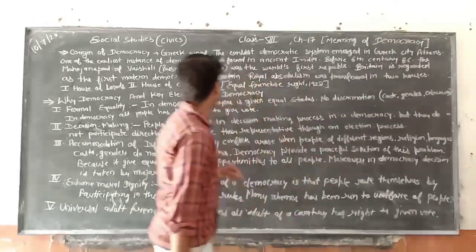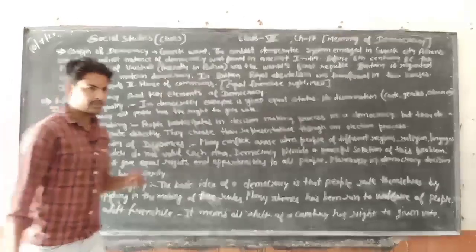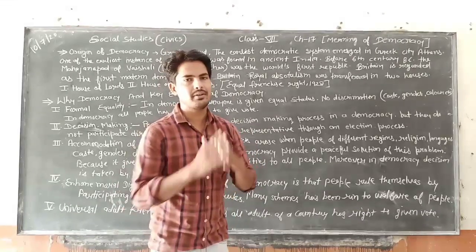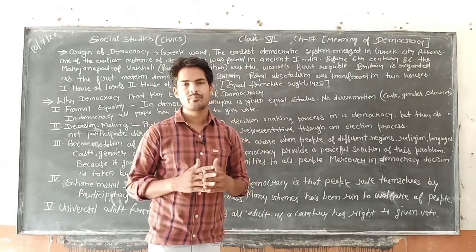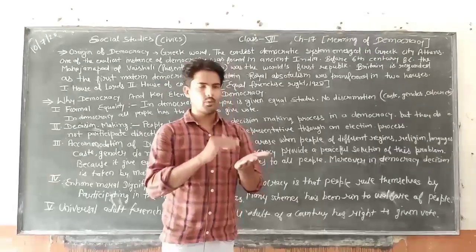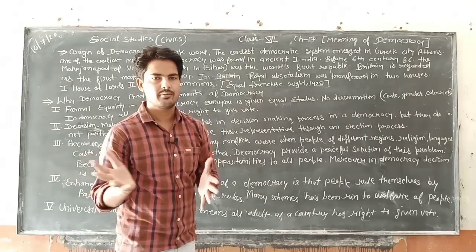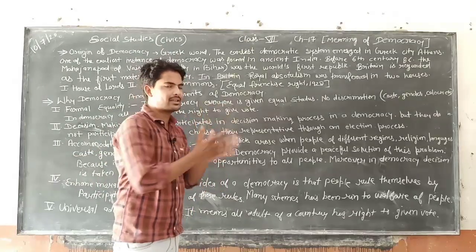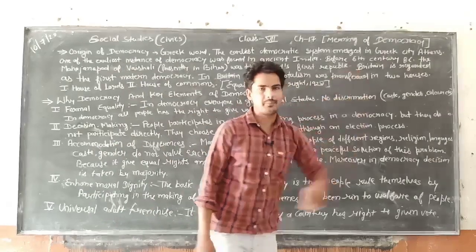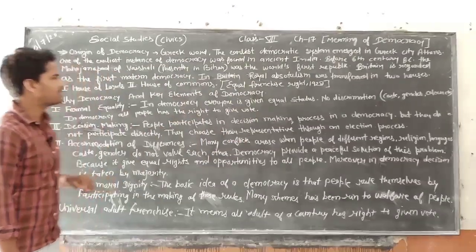Britain is regarded as the first modern democracy. There are two types of democracy on the basis of time: modern democracy and ancient democracy. Ancient means the oldest, and modern means adhunik. Modern democracy sabse pehle kahan mani gayi? Britain mein — Britain ko mana jata hai ki wahan sabse pehle modern democracy emerge hui thi.